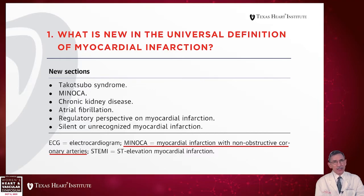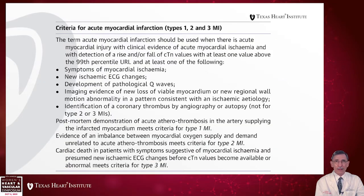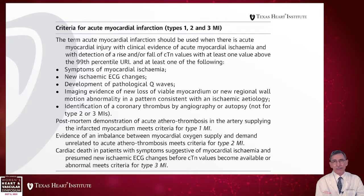Among new sections in the definition there is Takotsubo syndrome, MINOCA — our subject today — the role of chronic kidney disease, atrial fibrillation, and silent or unrecognized myocardial infarction. The criteria ultimately involves demonstration of myocardial injury as measured by troponin values, clinical symptoms of myocardial ischemia, electrocardiographic changes including possible development of pathological Q waves, other imaging evidence of loss of viable myocardium, or identification of coronary thrombus by arteriography.